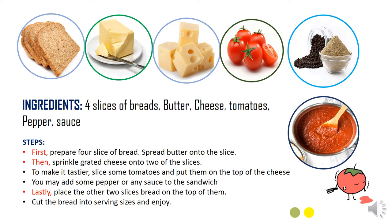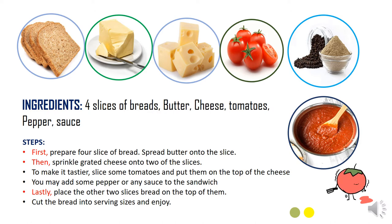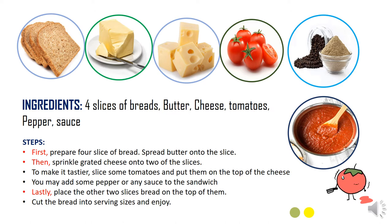Setelah kita mengetahui pertama adalah goal — tujuannya, yaitu how to make cheese sandwich — langkah selanjutnya adalah kita mengetahui apa yang dibutuhkan atau apa yang disiapkan, atau dalam bahasa Inggris disebut ingredients. Ingredients di sini lebih cocok diartikan sebagai bahan-bahan yang diperlukan, antara lain: four slices of bread, butter, cheese, tomatoes, pepper, sauce. Ada yang tahu teman-teman artinya apa?